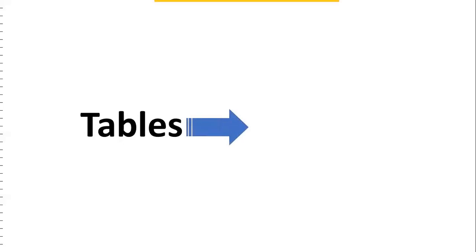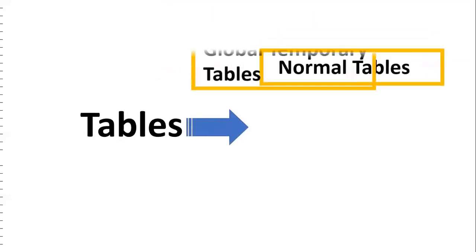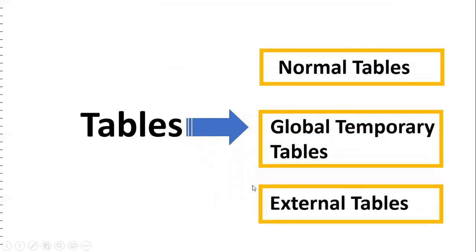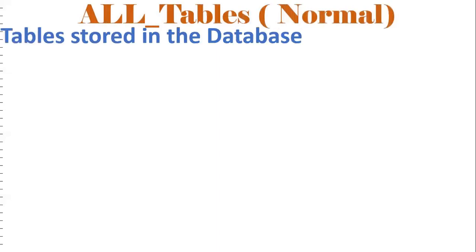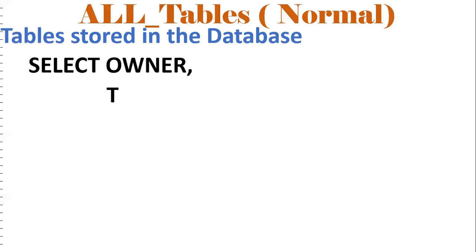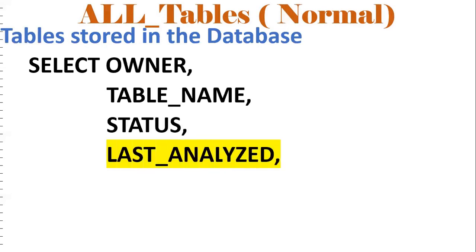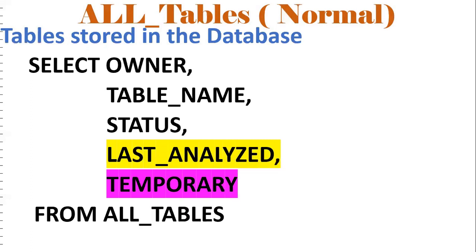Tables are of three types: normal tables, Global Temporary Tables (GTT), and external tables. To get information about tables, we use ALL_TABLES. It contains columns like owner, table name, status, last analyzed, and temporary.